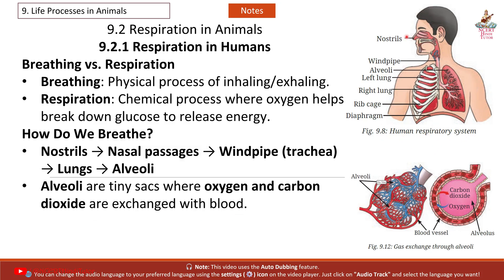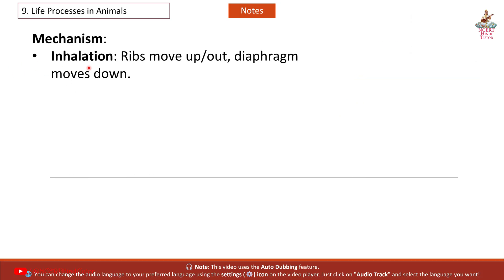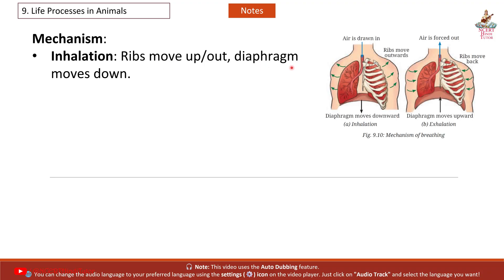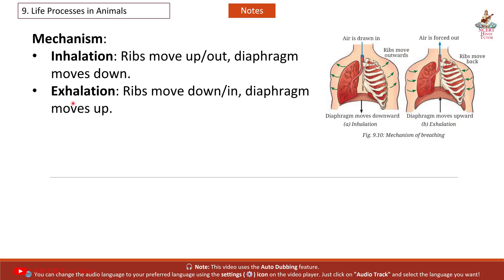This is the human respiratory system, showing nostrils, windpipe, alveoli, left lung, right lung, rib cage, and diaphragm. Gas exchange occurs through alveoli, where blood vessels exchange carbon dioxide and oxygen. Mechanism of breathing: during inhalation, ribs move up and outward and the diaphragm moves down, drawing air in. During exhalation, ribs move down and inward and the diaphragm moves up, forcing air out.